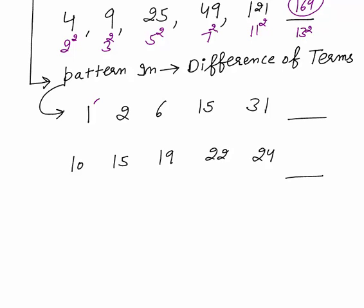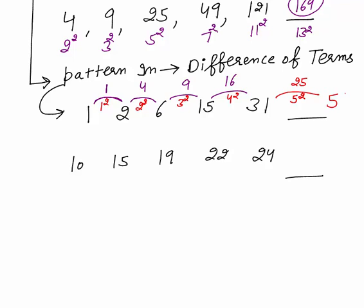Looking at the differences: between the terms the differences are 1, 4, 9, and 16 — which are 1 square, 2 square, 3 square, and 4 square respectively. The differences between terms are squares of consecutive natural numbers. So the next difference will be 5 square, which is 25. Adding 25 to 31 gives 56, and that is your answer — the next term is 56.